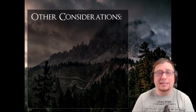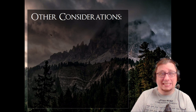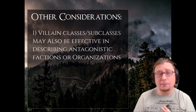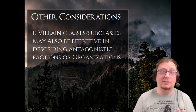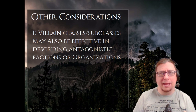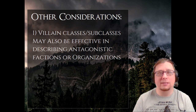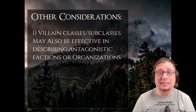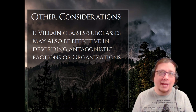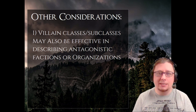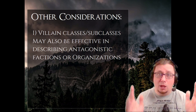A couple of things to consider as you think through these five villain classes: they can also be very effective in describing antagonistic factions or organizations. We've been looking at these as individuals — an individual stranger, an individual betrayer — but thinking about them as a faction, such as a rival adventuring guild trying to undercut your guild's tasks and jobs, or a betrayer noble house. This can scale up and down as needed.